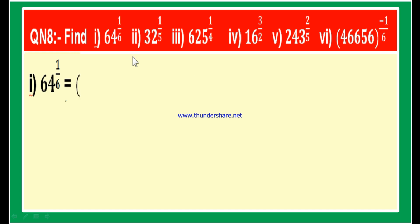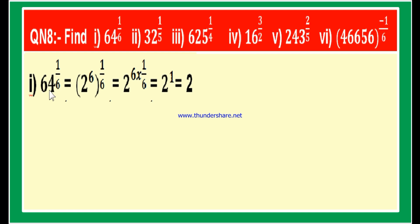Here is the solution. Let us consider the first part: 64 to the power of 1 by 6. If you divide 64 into prime factors, 64 equals 2 into 32, 32 is 2 into 16, 16 is 2 into 8, 8 is 2 into 4, and 4 is 2 into 2. So 64 equals 2 power 6. Therefore 64 whole power 1 by 6 equals 2 power 6 whole power 1 by 6, which equals 2 power 1, which is 2.